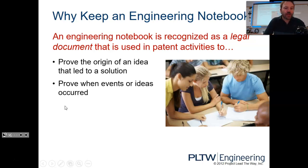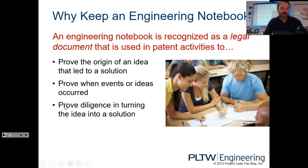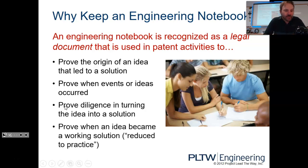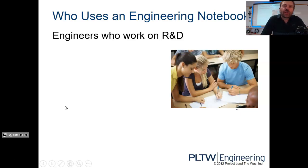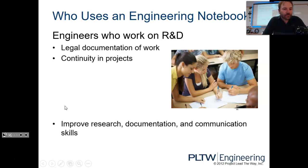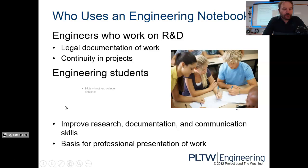We prove who came up with it, when they occurred, the diligence. Are you doing the actual math? Because maybe you build something that breaks. You can prove that they did the math, that this should have worked. This wasn't an engineering fault. This was a manufacturing fault. Who did it? And then prove when an idea became a working solution. So when did it actually start working? Who uses this? Engineers who work on what's called R&D. And that stands for research and design. Also engineering students in high school and college.